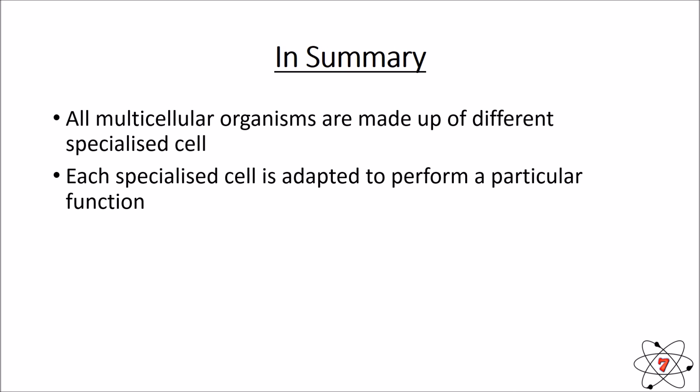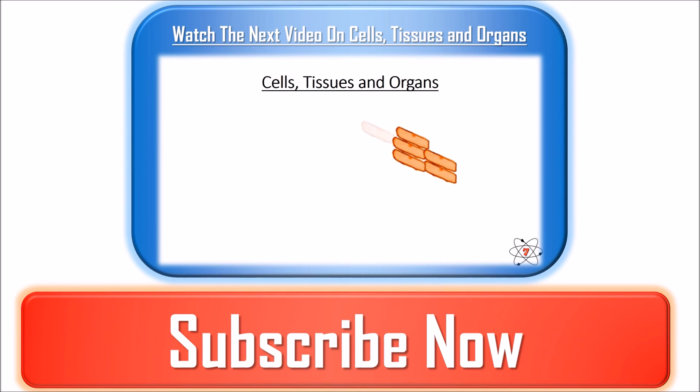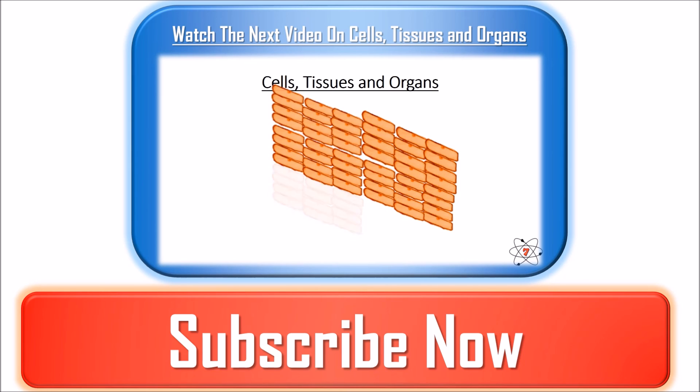In summary, all multicellular organisms are made up of different specialized cells. Each specialized cell is adapted to perform a particular function, and every specialized cell has different features that allow it to do a specific job. Every specialized cell in a multicellular organism is adapted to help with one or more of the seven life processes, keeping the organism alive. If there's anything you haven't understood, re-watch the video — these are really key ideas, and when we look at body systems in a few lessons' time, it'll be vitally important you understand them. Don't forget to use the resources to help your learning, and feel free to write any questions in the comments.